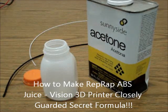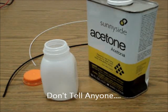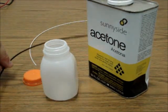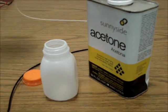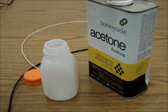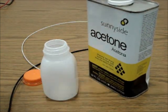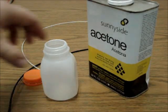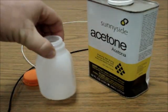Here's my formula for using ABS juice, or what the RepRap community calls ABS juice. Basically, what ABS juice is is ABS filament—either 3 millimeter or 1.75 millimeter—and acetone, just regular garden variety acetone that you can find at a hardware store, mixed together in a little jar.